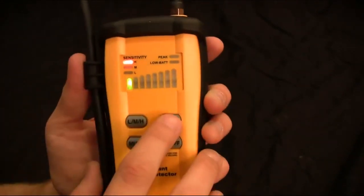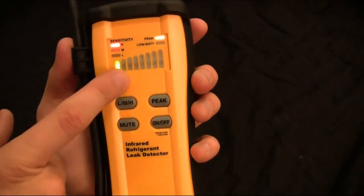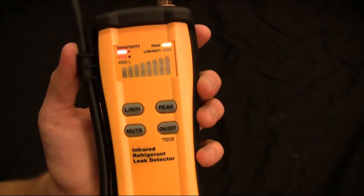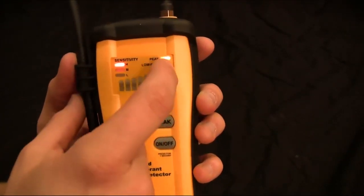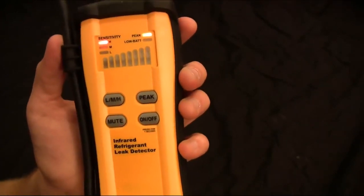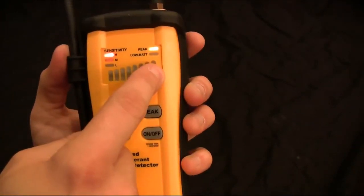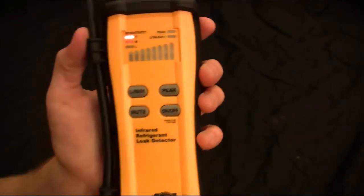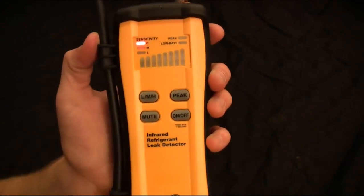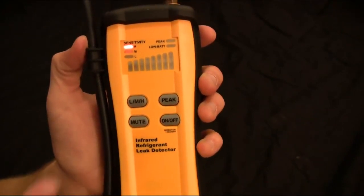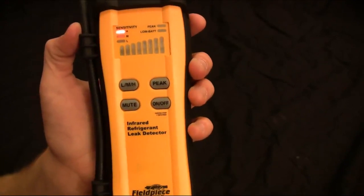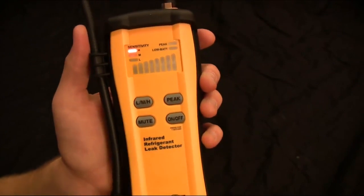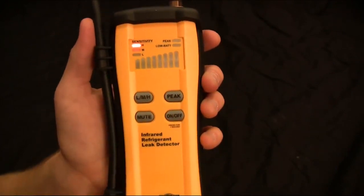Then we have the peak button. If you press peak, that light will turn on. This will hold the highest level that you sense while still being able to sense leaks. So if you got it all the way up, it'll hold this LED showing you that you got the highest level, and it'll still allow you to sense leaks while it holds that. Then we have the mute button. The bar graph will still light up so you can see it while it's muted, if you're in places where you don't want the occupants to be disturbed by the buzzing of the SRL-2.